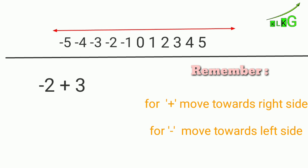Minus 2, so first we have to point out minus 2, and then plus 3 means we have to move 3 steps which side? Right side. So we will move 3 steps right side: minus 1, 0, and plus 1. It means minus 2 plus 3 is equal to plus 1.